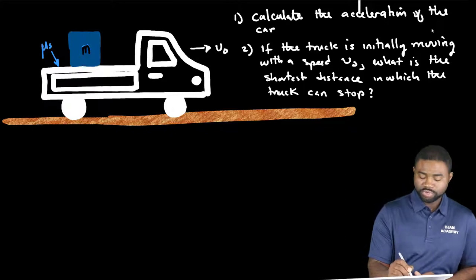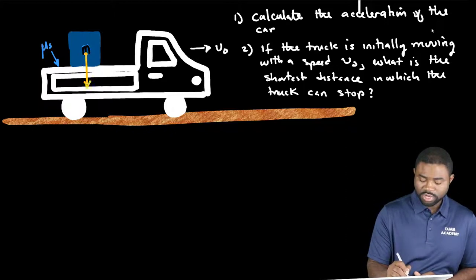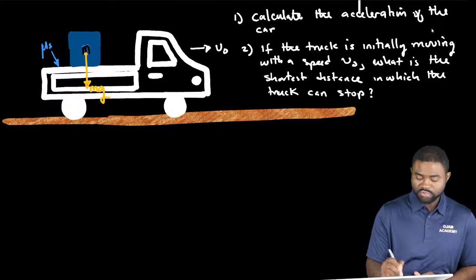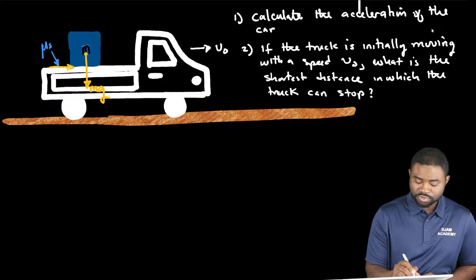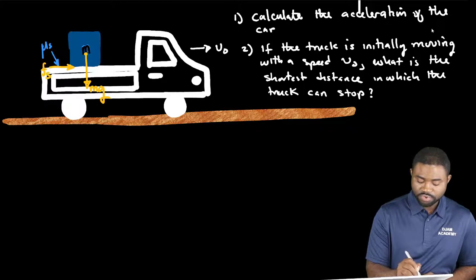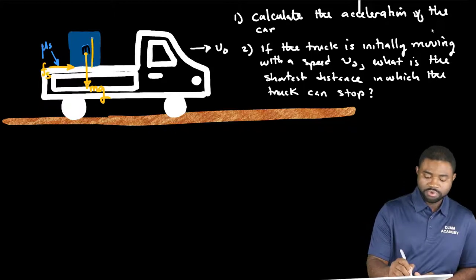So if we do the free body diagram, we will have the weight of the box acting vertically downwards. There is static friction force which is acting forward, and there is a normal force which is acting vertically upwards.